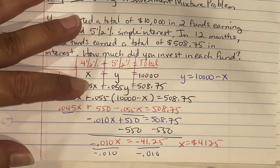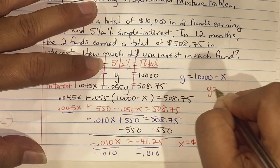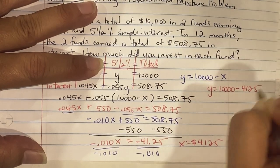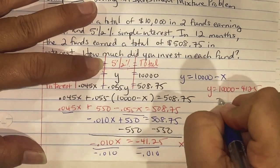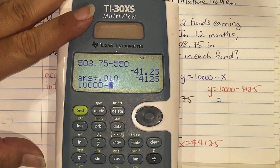Now to find Y, remember Y equals 10,000 minus X. So Y is 10,000 minus 4,125, which is 5,875.